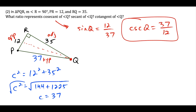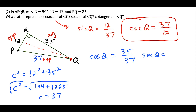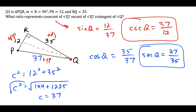Next, secant of angle Q. Secant is the reciprocal of cosine. Cosine of angle Q is the ratio of the side adjacent to the angle, which is 35 units long, over the hypotenuse, which is 37 units long. So secant of angle Q is the reciprocal — we flip that fraction — and we get 37 over 35. That's our second ratio.